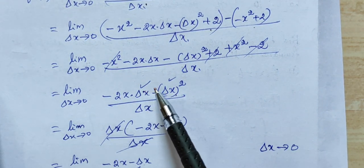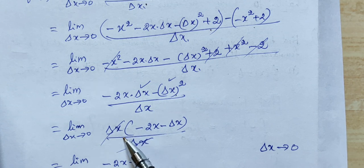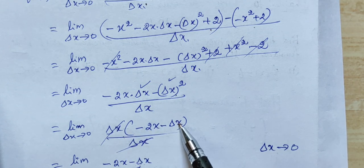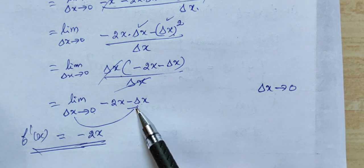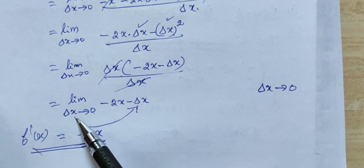Here is delta x. Delta x cancels from the numerator and denominator. Then, the first term is delta x. Delta x is cancelled, so we get -2x - delta x.